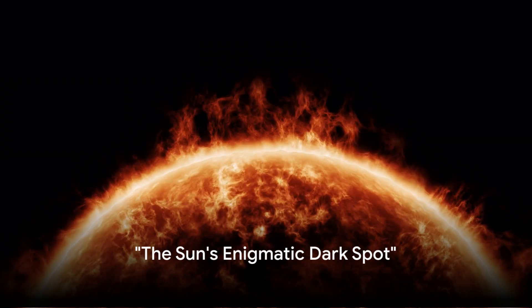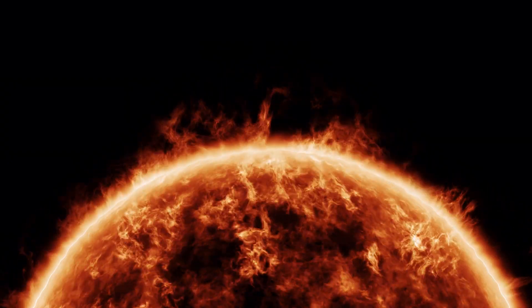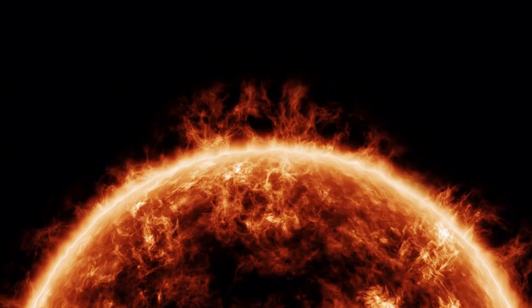Ever wonder what a 60-Earth-sized hole on the Sun would look like? Picture this, a colossal dark spot known as a coronal hole appearing on the Sun.